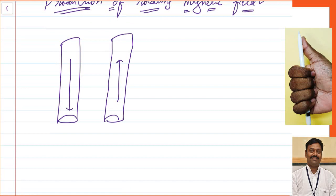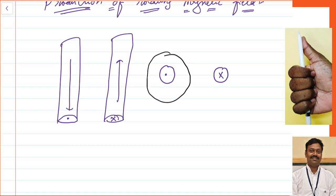Whenever the current is coming towards us, we represent it by a dot; if the current is going away from us, we represent it by a cross. So if you want to find the direction of the magnetic field produced by this, the magnetic field will be surrounding these conductors. You can find it by using the right-hand thumb rule.